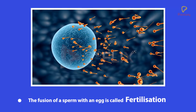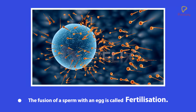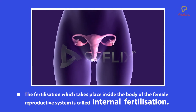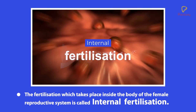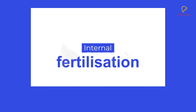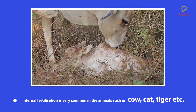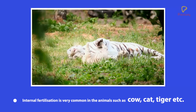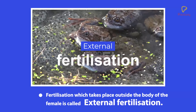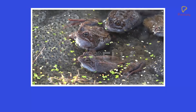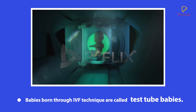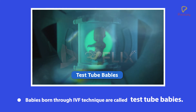Summary: The fusion of a sperm with an egg is called fertilization. The fertilization which takes place inside the body of the female reproductive system is called internal fertilization, common in animals such as cow, cat, tiger, etc. Fertilization which takes place outside the body of the female is called external fertilization, common in aquatic animals such as fish, starfish, etc. Babies born through IVF technique are called test tube babies.